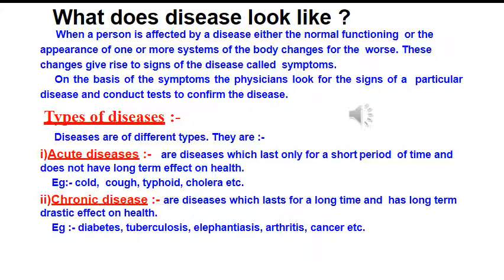Diseases are of different types. Acute diseases are diseases which last only for a short period of time and do not have a long-term effect on health — for example, cold and cough. Chronic diseases are diseases which last for a long time and have a long-term drastic effect on health — for example, diabetes, tuberculosis, elephantiasis, arthritis, cancer, etc.